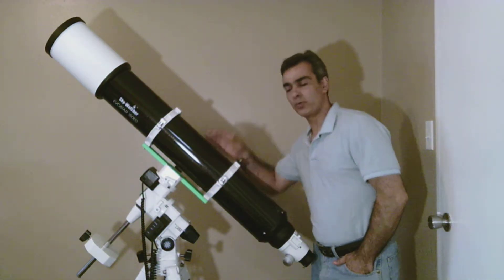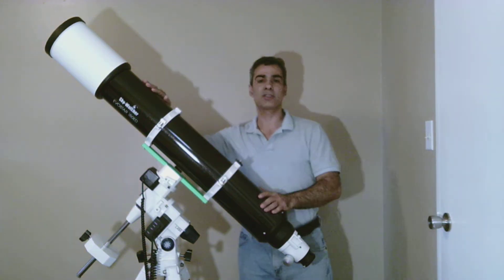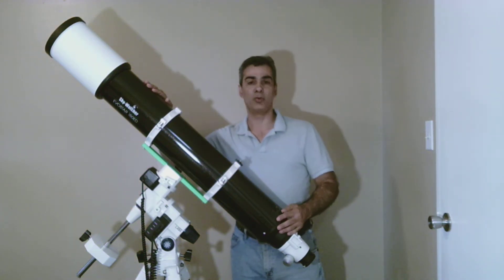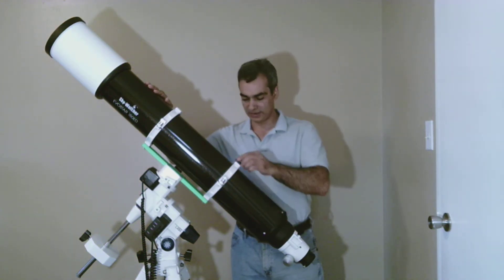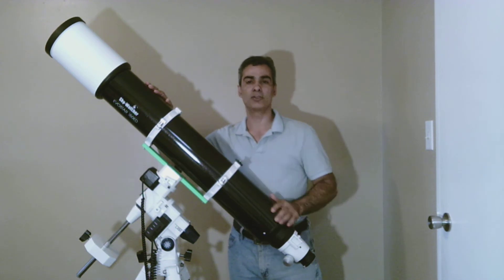Hey everybody, my name is Joe Jaguar. We are going to be talking about this scope on this episode here. What this is, is a 6 inch Skywatcher Evo, Apochromatic, or short for Apo.